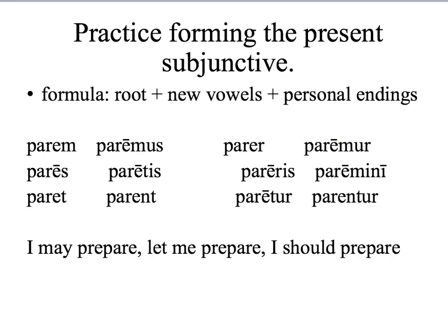Repeat the formula: root, new vowels, plus personal endings. So if I take my pattern verb for first conjugation — paro, paras, parat — that was the present indicative. Here I've got the present subjunctive: root, plus new vowel E, plus personal endings. In the passive: root, plus new vowel, plus passive personal endings.